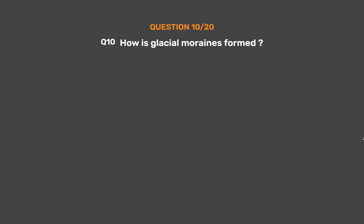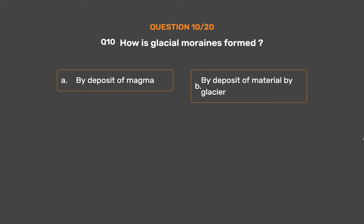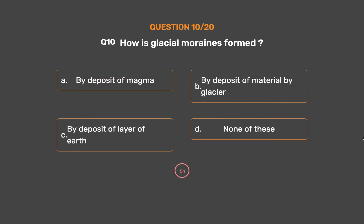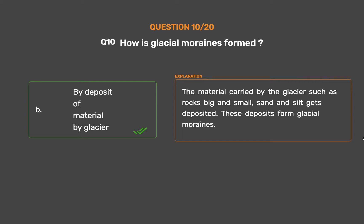Question No. 10: How are glacial moraines formed? Option A: By deposit of magma. Option B: By deposit of material by glacier. Option C: By deposit of layer of earth. Option D: None of these. The correct answer is Option B. The material carried by the glacier, such as rocks, small sand and silt, gets deposited. These deposits form glacial moraines.